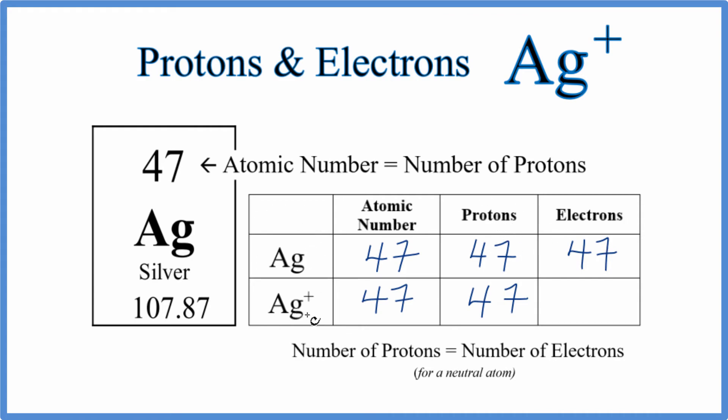For silver, though, we've lost one electron. And since electrons are negative, if you lose that electron, you have a positive charge. So we're going to remove one electron here from the neutral silver. So instead of 47, we get 46, and now we have that positive charge.